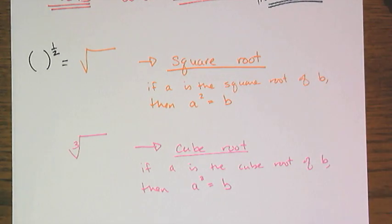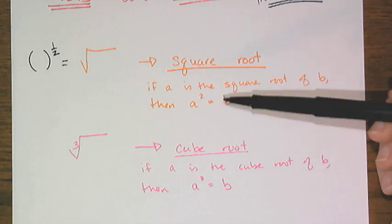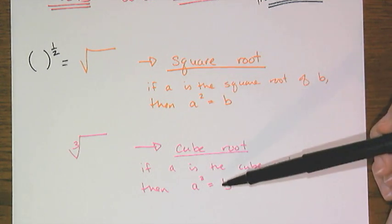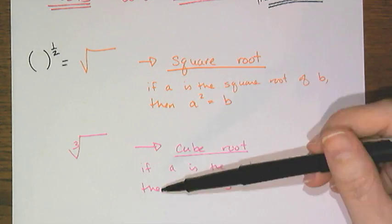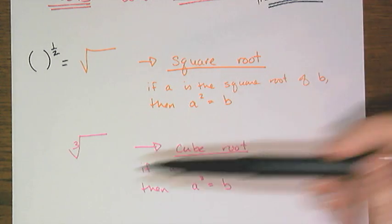The cube root has a very similar definition to the square root, but instead of a squared, it's a cubed. So if a is the cube root of b, then a cubed equals b.